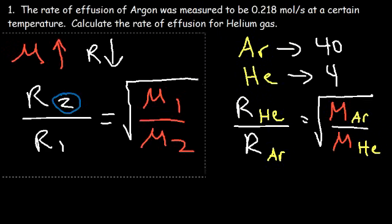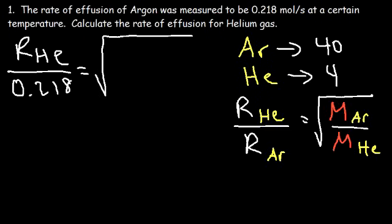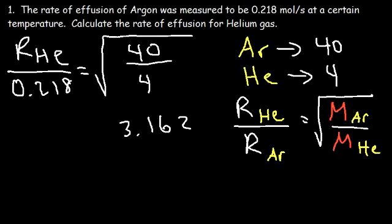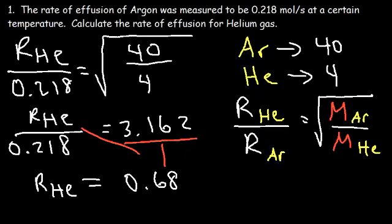Now let's plug in the information we have. The rate of effusion for argon is 0.218, the molar mass of argon is 40, and the molar mass of helium is 4. 40 divided by 4 is 10, and the square root of 10 is about 3.162. Cross-multiplying to solve for the rate of effusion for helium: 0.218 times 3.162 is about 0.6894 moles per second.